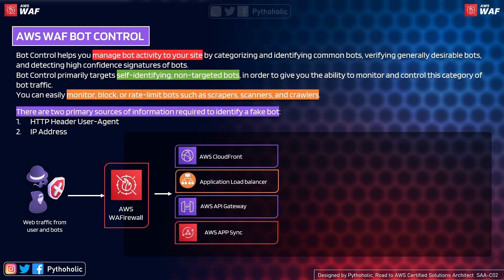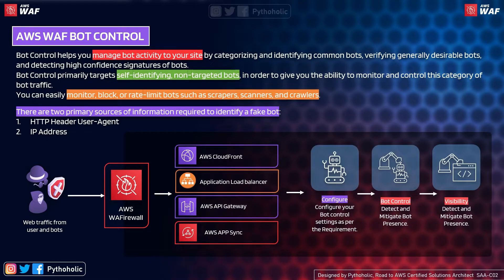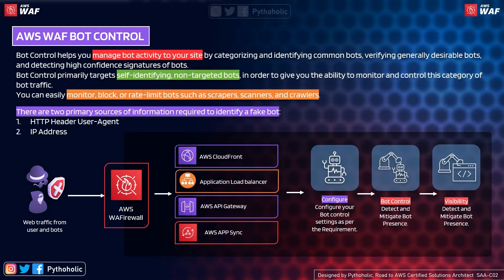There are two primary sources of information required to identify a fake bot. The first is the HTTP header user agent: the request header gives information about what browser is being used, and fake bots can use strings similar to popular browsers — like the same user agent string used by Google, Bing, or Mozilla — to pretend they are legitimate bots. The second is IP address: you can check the IP address and match it against valid search engine provider networks like Google, Mozilla, or Bing, and blacklist it if it doesn't match.